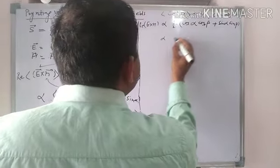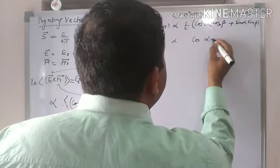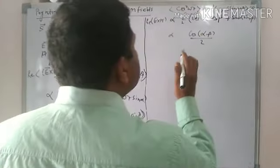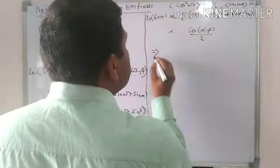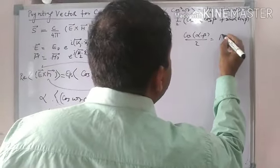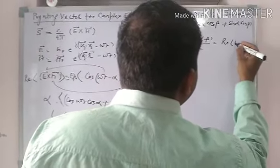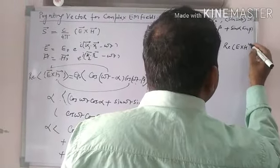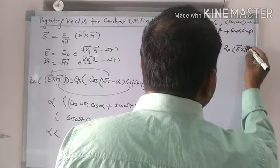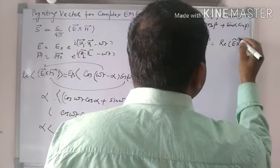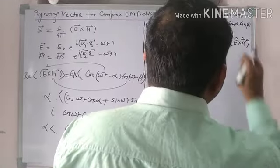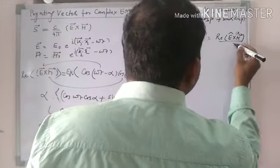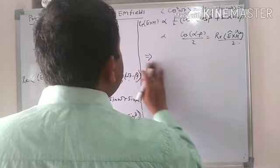So this is going to give cos(α - β) over half. So what is this thing? This suggests that this is basically real of E, this is real of E cross H* basically. So in fact if I wish I could write this thing, E cross H* upon 2. So from here similarly if we choose.